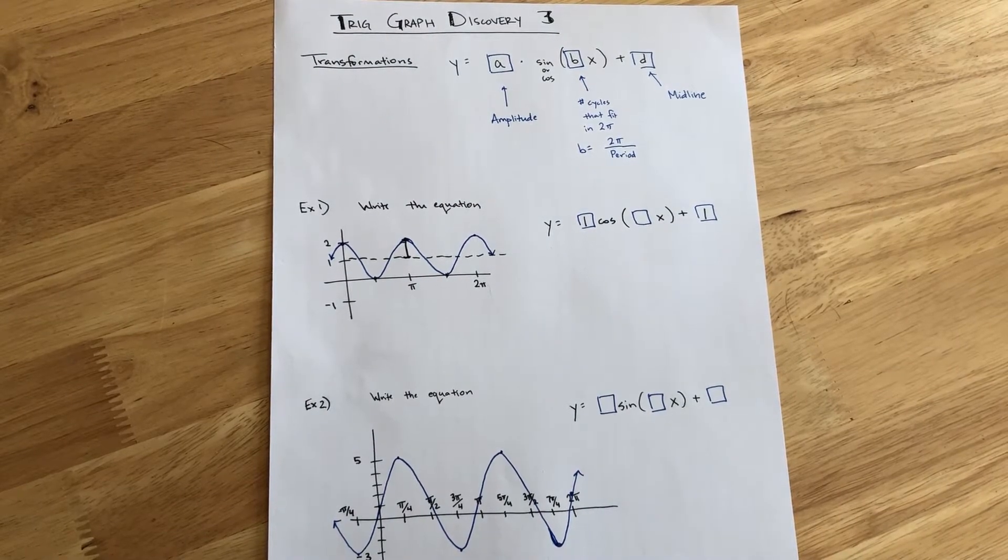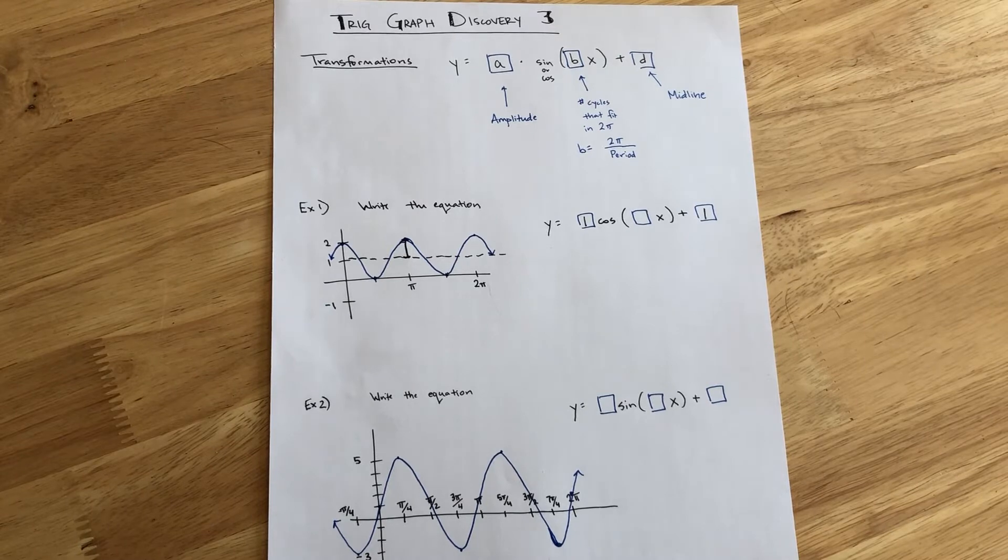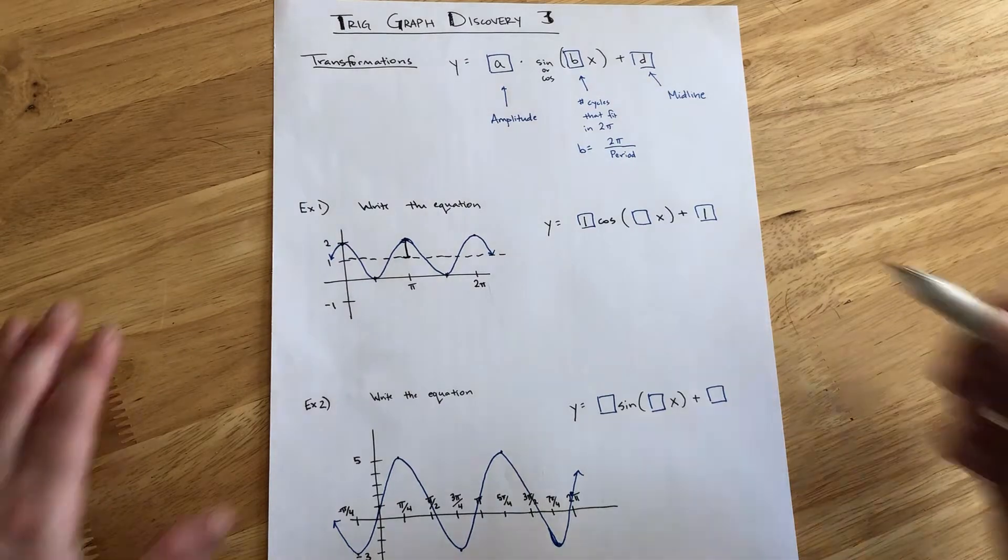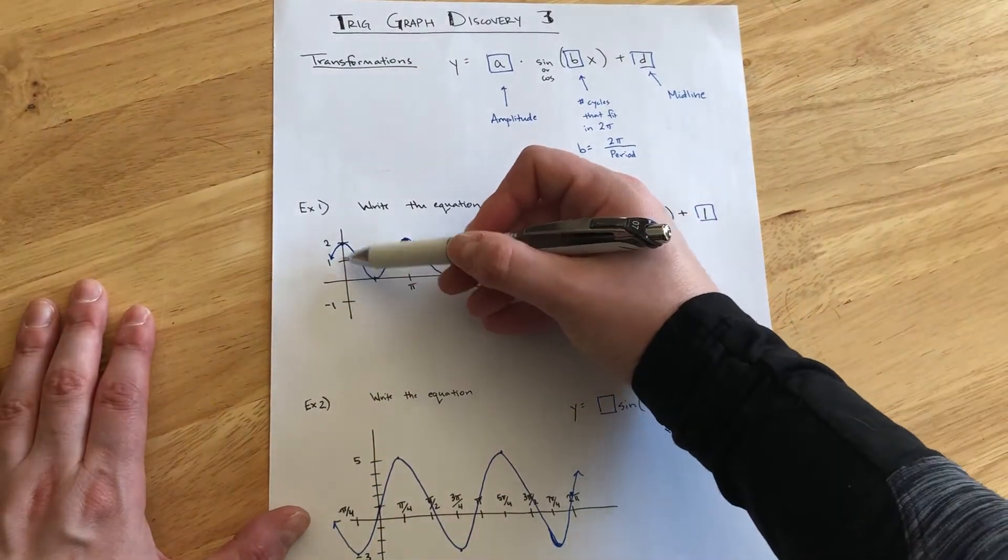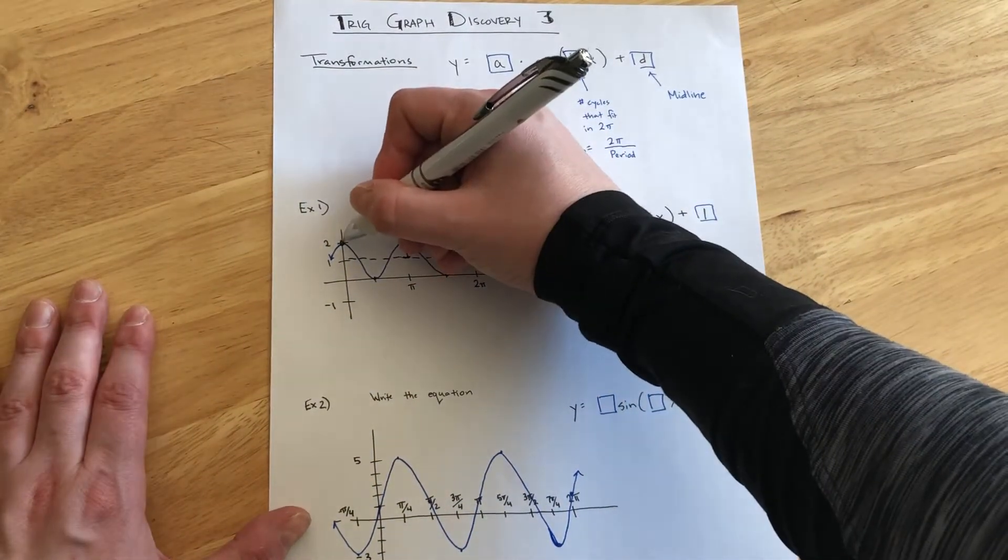Our B parameter is only 1 if there is 1 cycle in the space of 0 to 2π. So, let's take a look at what's happening here. So, it's a cosine function starting on that peak.